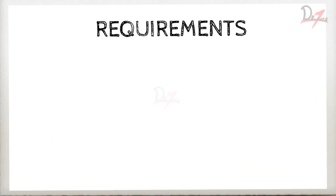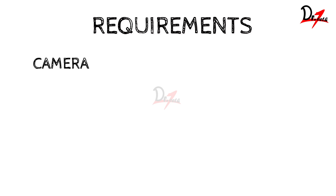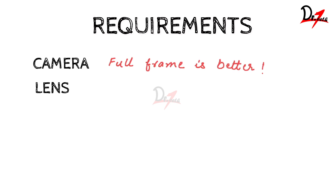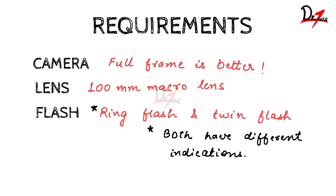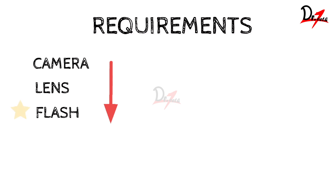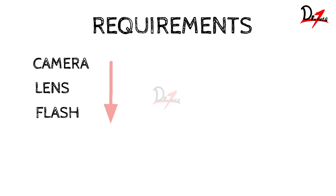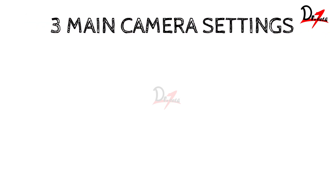What do we need for dental photography? We need a DSLR, a good lens — a 100mm macro lens is recommended — and a dedicated flash system. Out of these three, the flash system is the most important, so you need to invest the most money there. The lens comes next, and the least important is the DSLR body. Invest in a good lens and a good flash system.